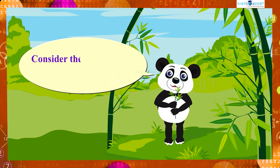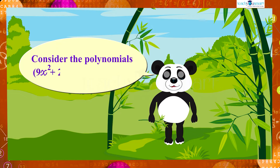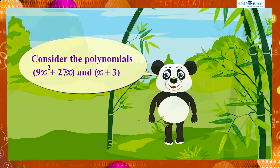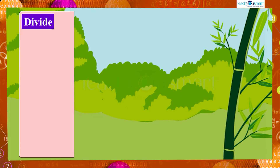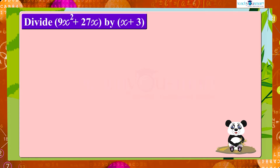Consider the polynomials 9x² + 27x and x + 3. For dividing 9x² + 27x by x + 3, we have to write the given polynomials in their factor form.